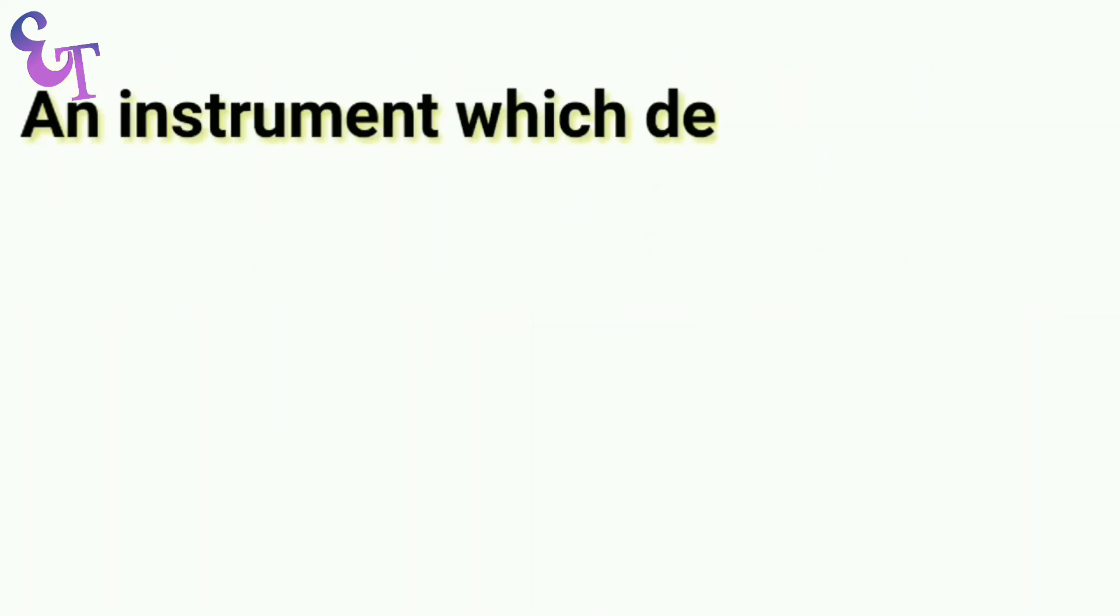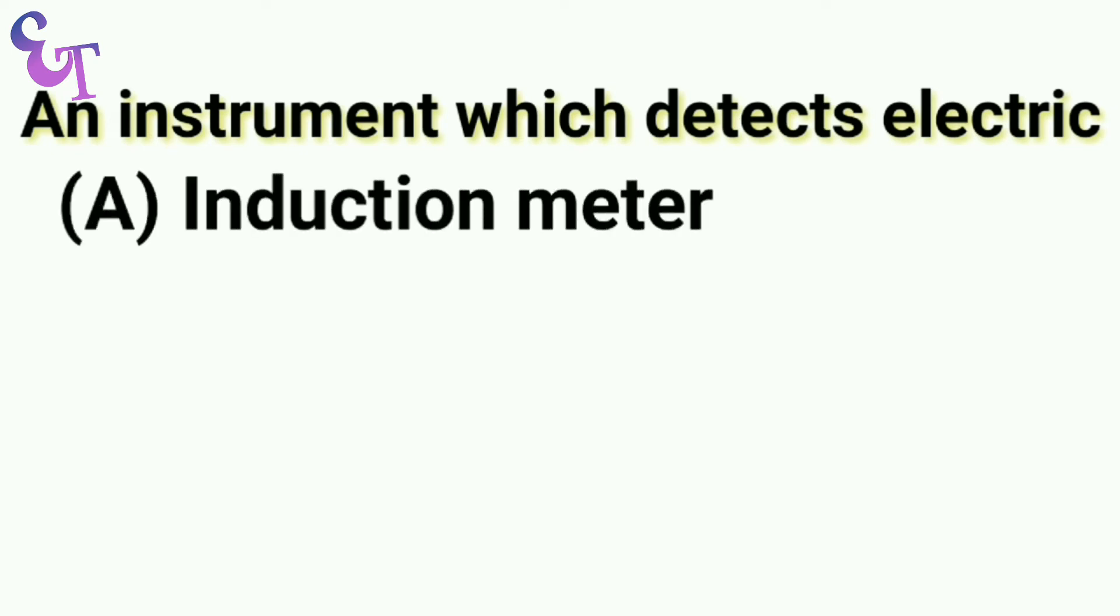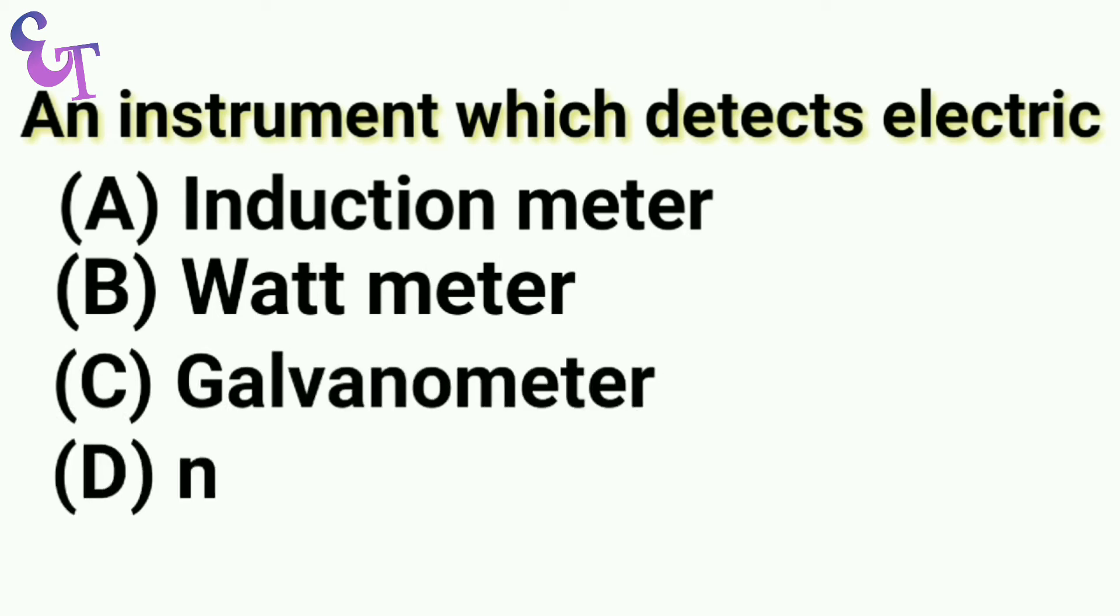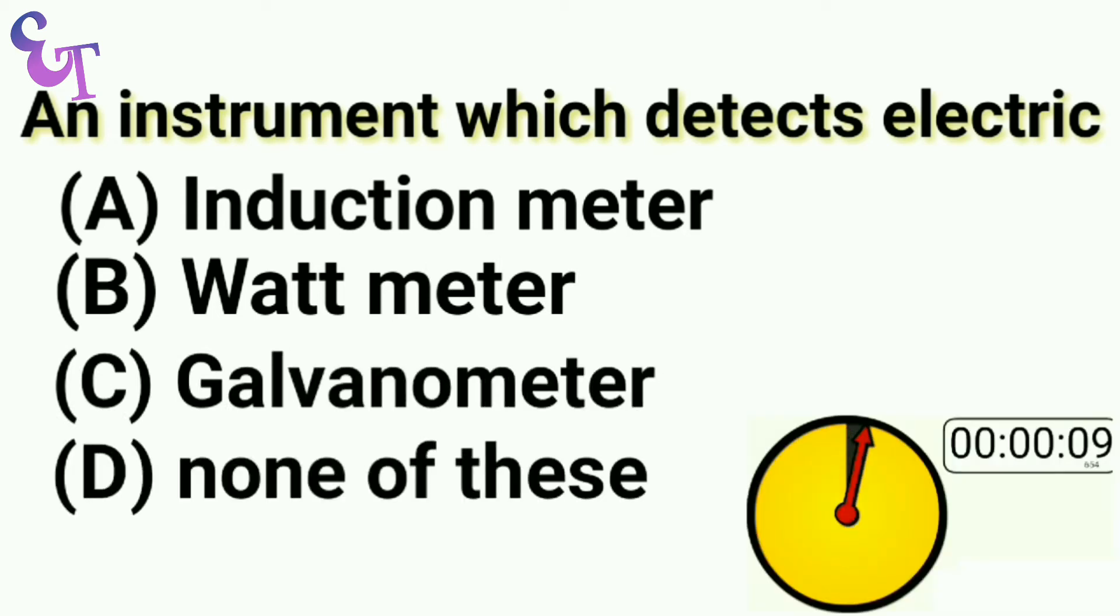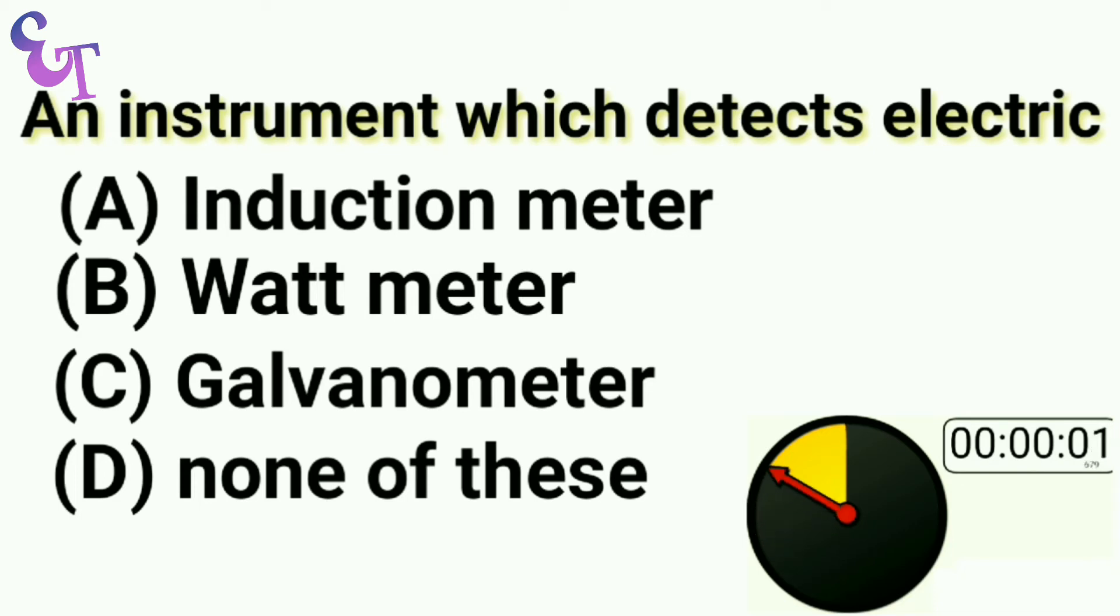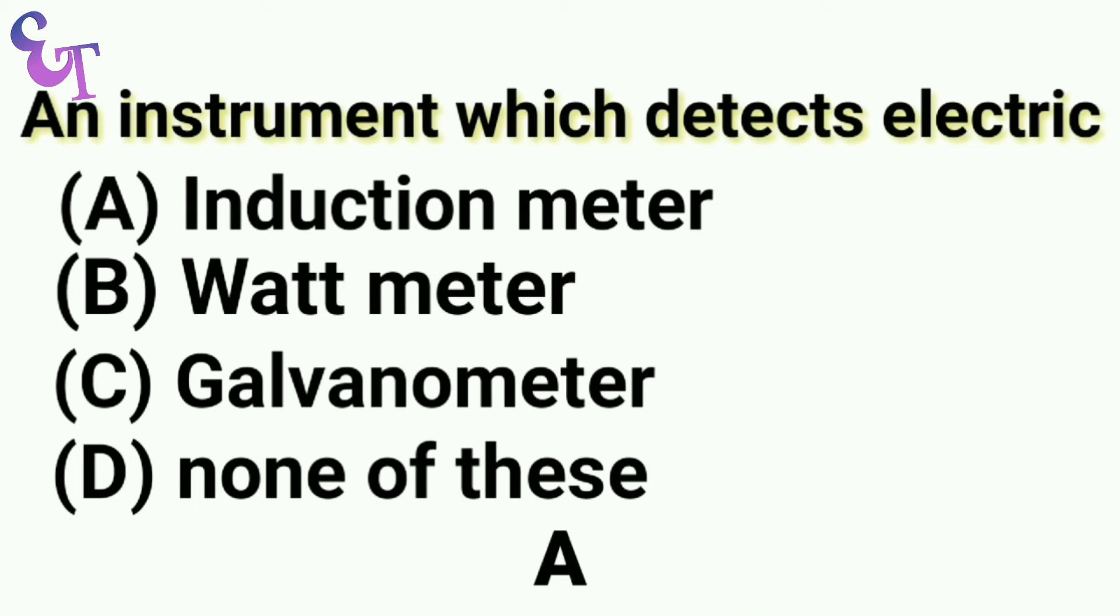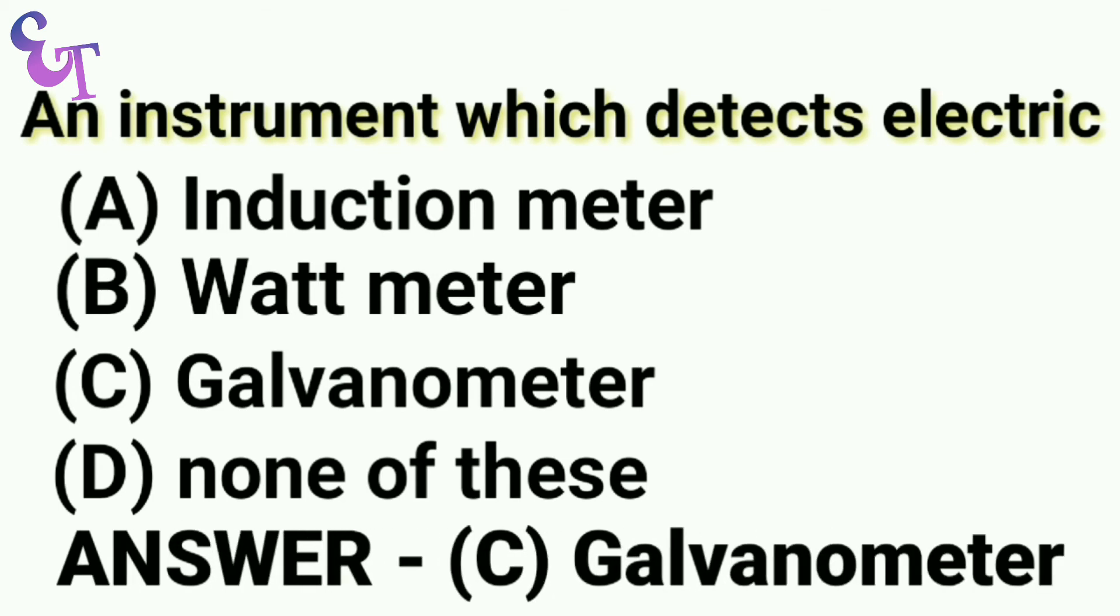Question number 5: An instrument which detects electric current is called A. Induction meter, B. Watt meter, C. Galvanometer, D. None of these. The right answer is C. Galvanometer.